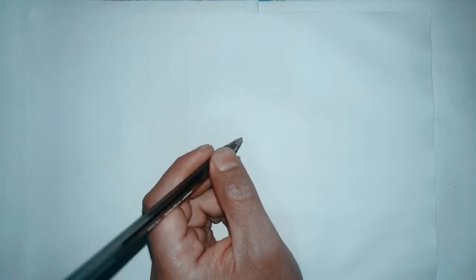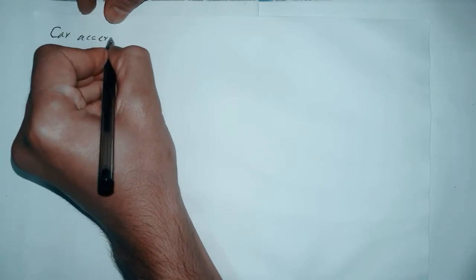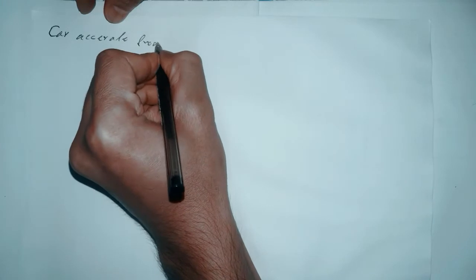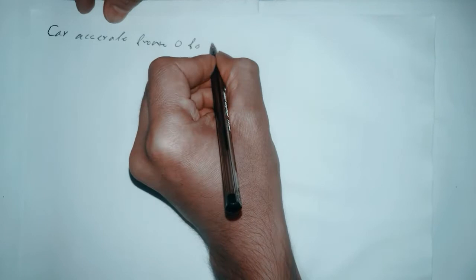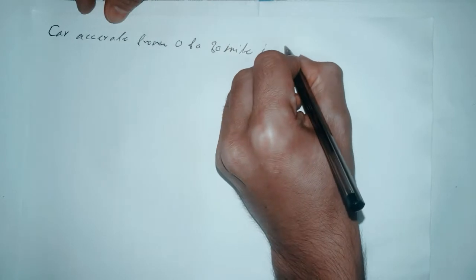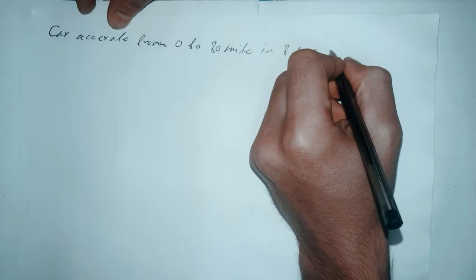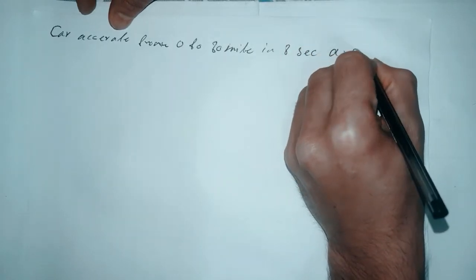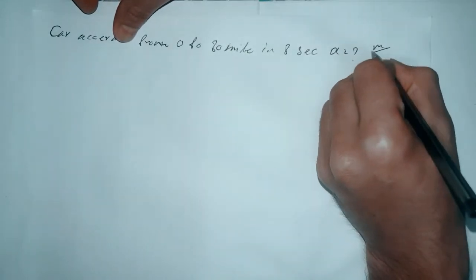In this video we are going to go through some examples of acceleration. First one: if a car accelerates from 0 to 80 miles per hour in 8 seconds, so we have to find the acceleration, and we have to find this in meters per second.